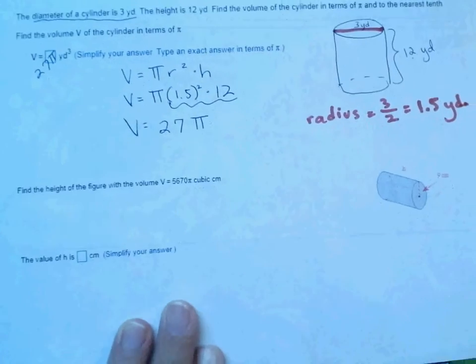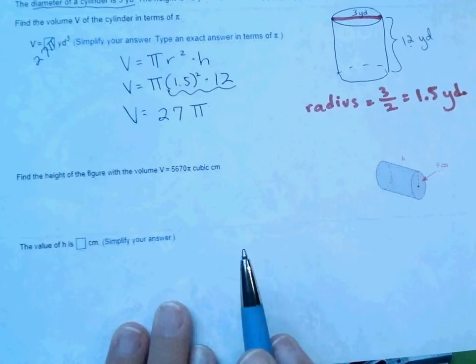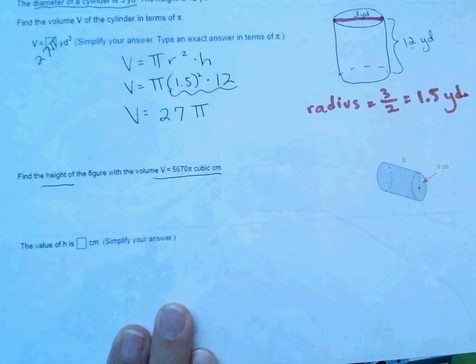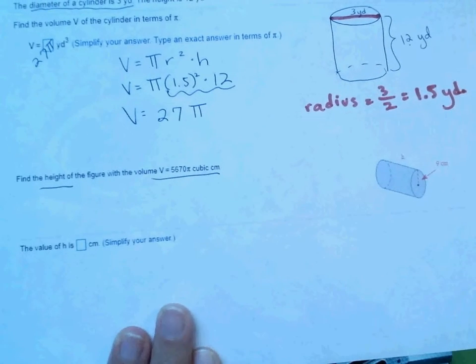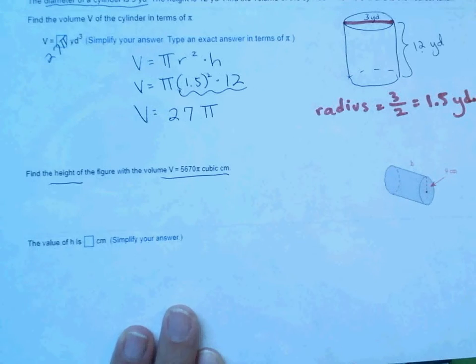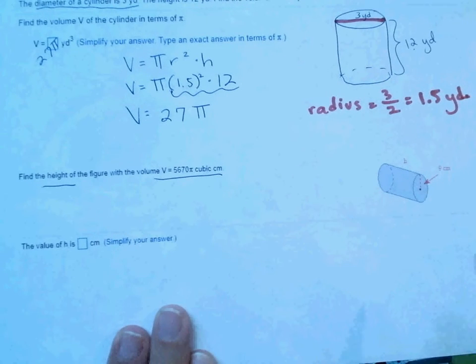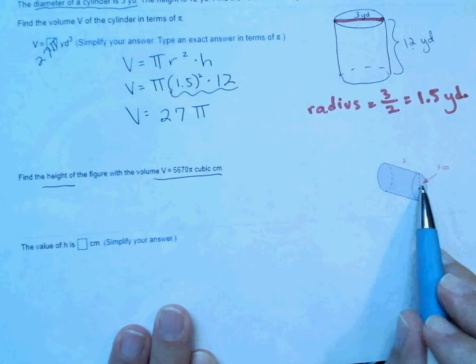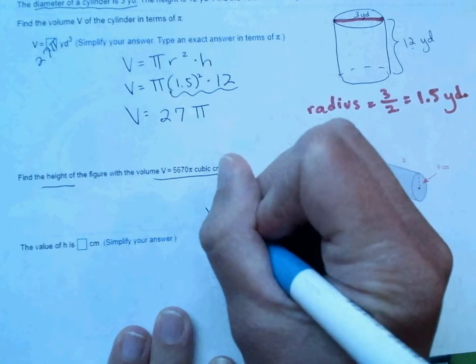And then last example says, find the height if the volume is 5,670 pi cubic centimeters. So this one we're going to be working backwards. Notice our picture, they give us a radius. So we're going to be solving an equation.